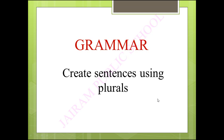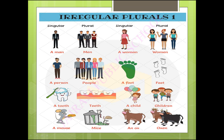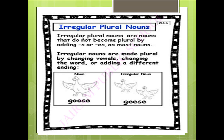Create sentences using plurals. Irregular plural nouns are nouns that do not become plural by adding S or ES as most nouns. Generally in plural nouns we add S or ES, or sometimes we change IS to ES. But in irregular plural nouns we cannot do that — they are made plural by changing vowels, changing the word, or adding a different ending. For example: goose becomes geese. This is an irregular plural.